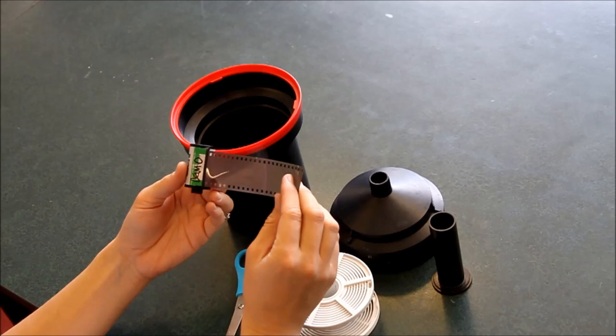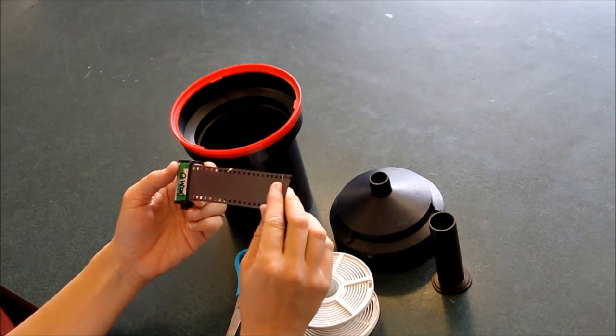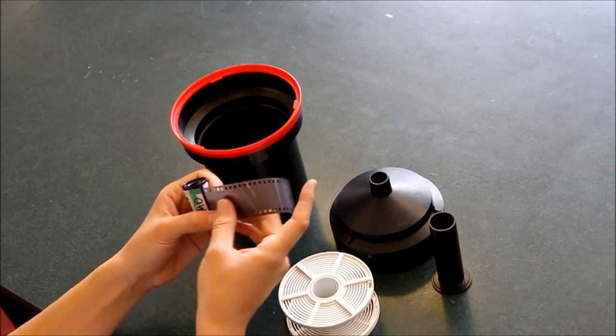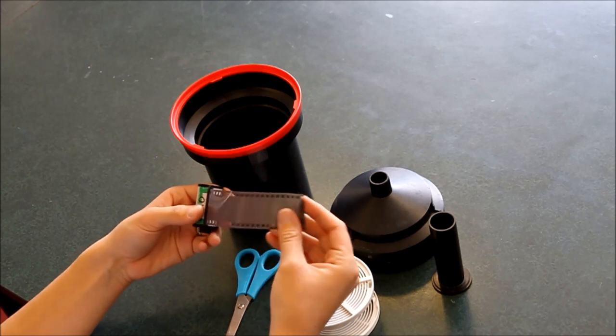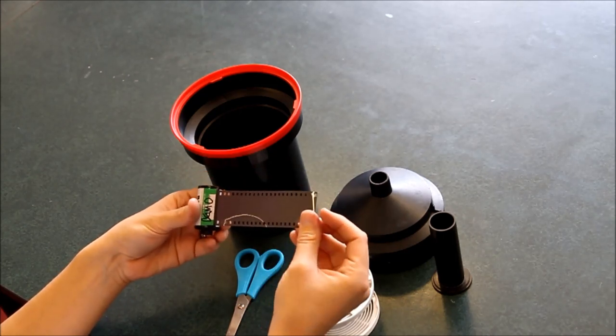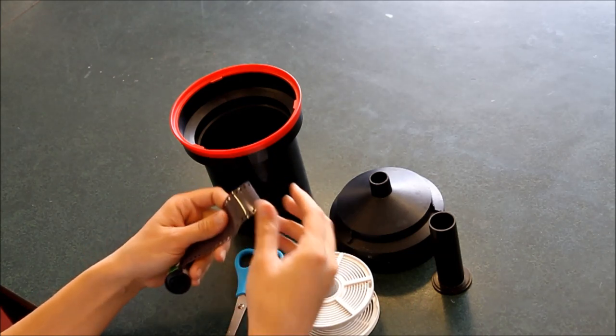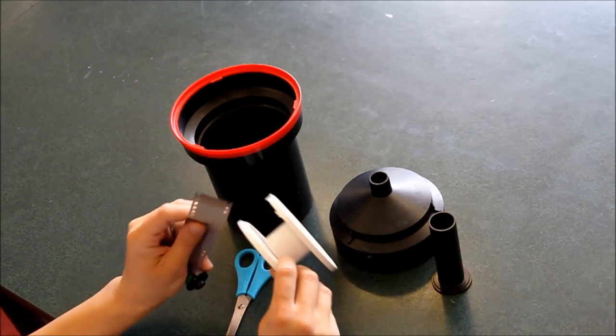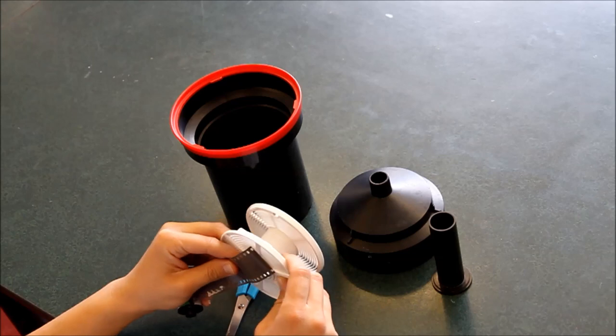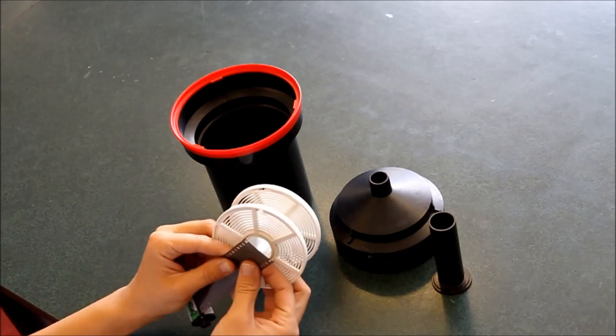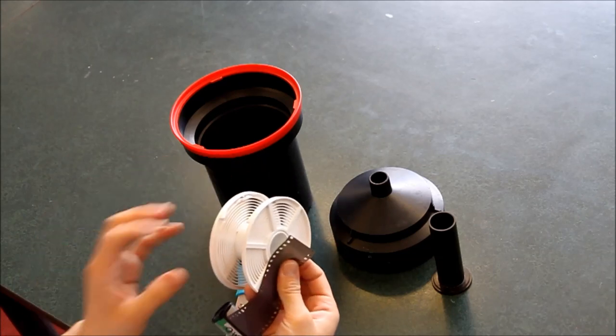The reason you pull out this much is because when you were loading it into your camera before you did actually have quite a lot of film out, so this part has already been exposed to light anyway, so you're not going to be losing any of your photos. Just don't pull it out too much. Now these steps are all done in the light, but soon I'll tell you when you need to go into the darkroom into complete darkness.